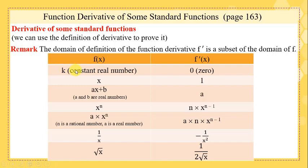If the function is constant, for example f(x) = 5 or f(x) = -7, then its derivative equals 0. If the function equals x, the derivative equals 1. If the function equals the binomial ax + b, then the derivative equals a. If the function equals x^n, the derivative equals n multiplied by x^(n-1). If the function is the monomial ax^n, then its derivative is a·n·x^(n-1).